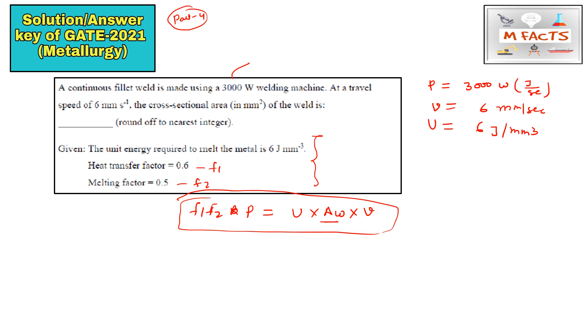This f1 f2 doesn't have any unit. This power has unit joule per second. This u is basically the unit energy required to melt the metal, so it will be in joule per mm cubed. We need to find the unit of area, so Aw into velocity.